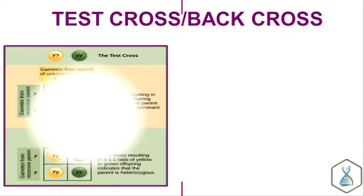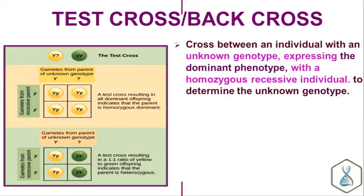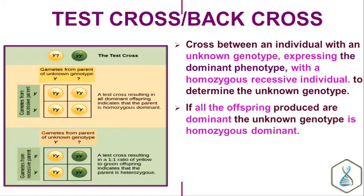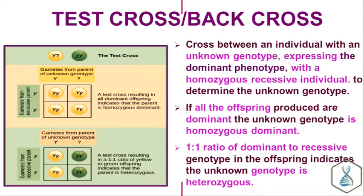What is a test cross and a back cross? When an individual with an unknown genotype, usually expressed as a dominant phenotype, is crossed with a homozygous recessive individual, it is referred to as a test cross. Since this homozygous recessive individual is one of the parental types, it is also referred to as a back cross. This cross is conducted to determine the unknown genotype. If all offspring produced are dominant, the unknown genotype is homozygous dominant. If we get a 1:1 ratio of dominant to recessive, the unknown genotype is heterozygous.